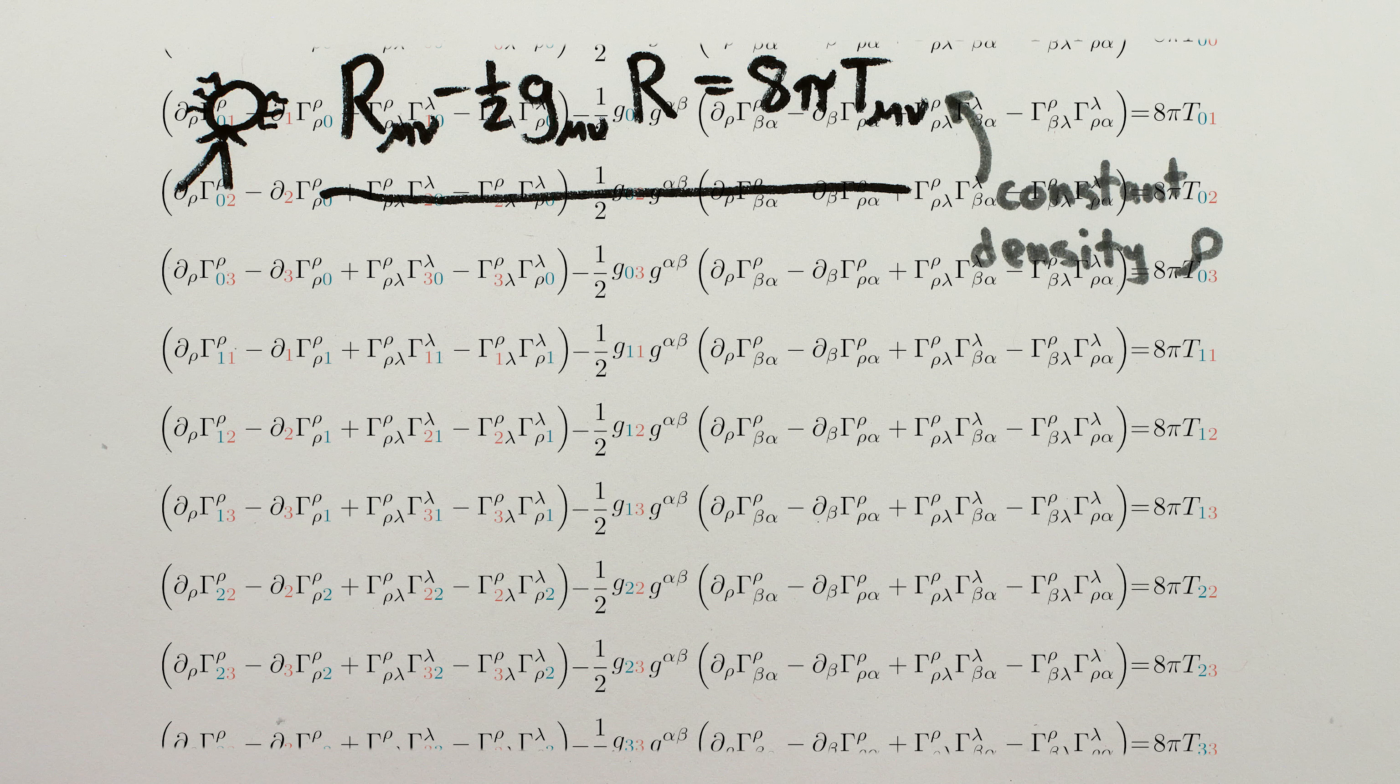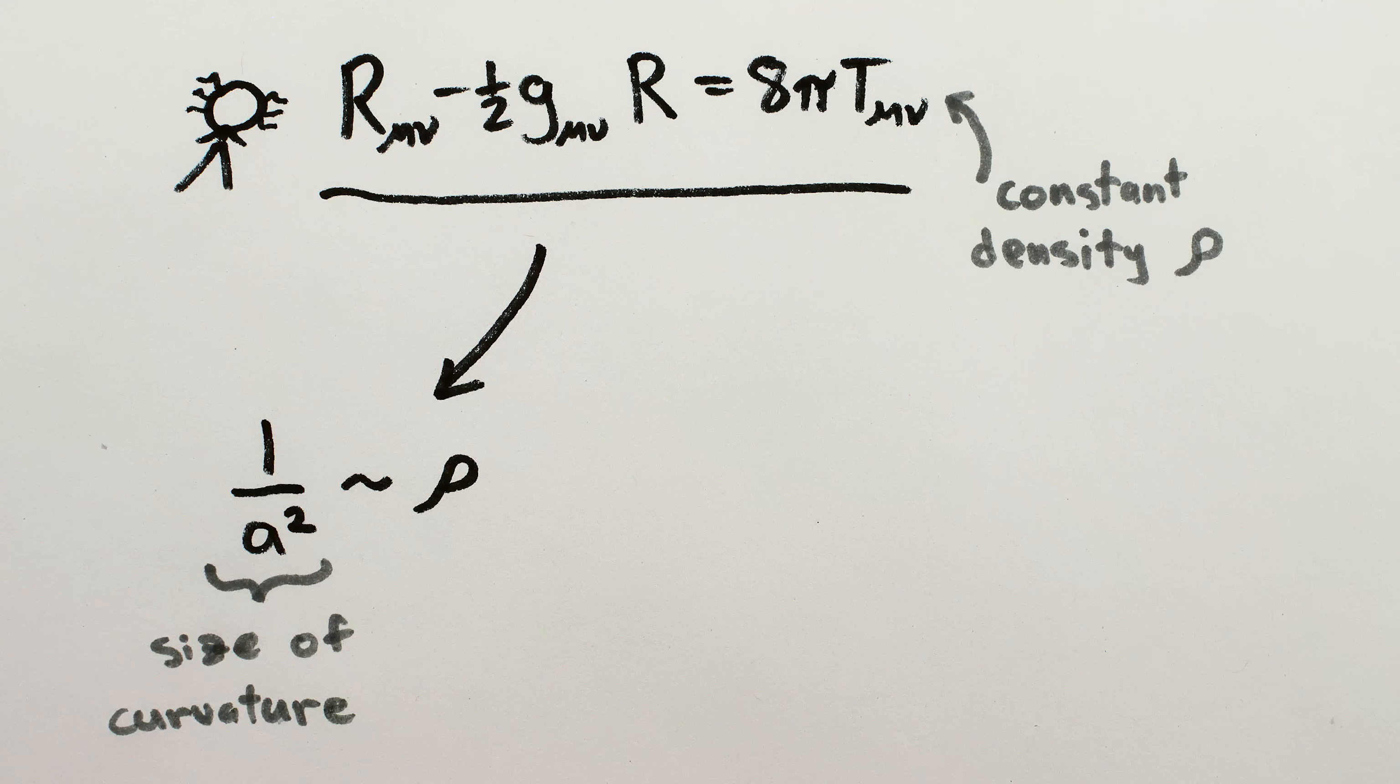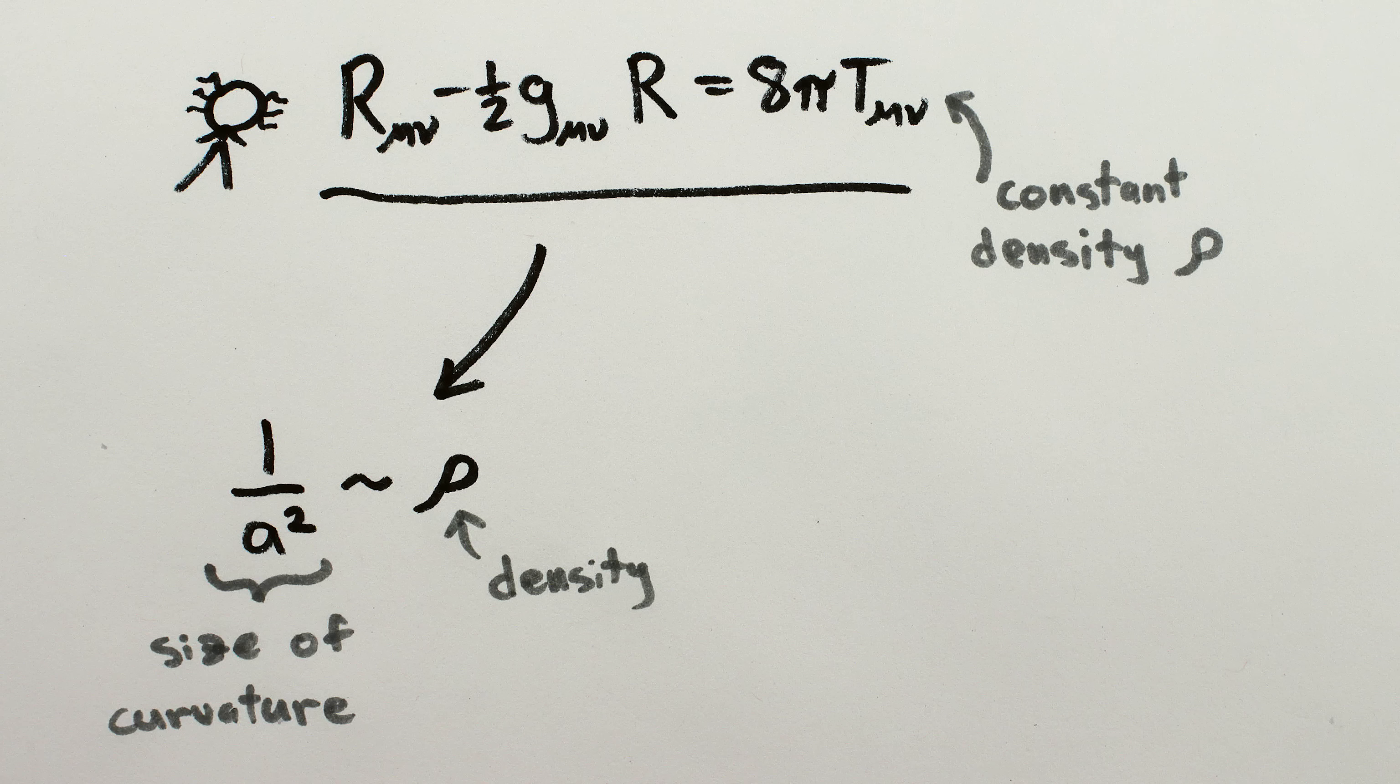And Einstein was able to solve the equations for a very simplified universe with constant density everywhere. The ten complicated equations reduced to just two simple ones. This one says that the curvature of space in the universe is proportional to the density, so more stuff in the universe means more curvature of space.